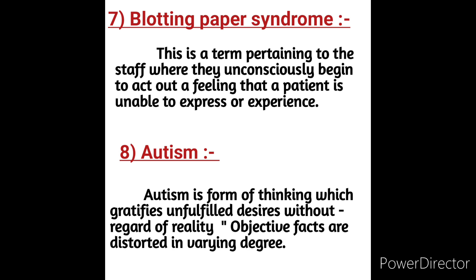Autism is a form of thinking that gratifies and fulfills desires without regard for reality; objective facts are distorted to varying degrees. Autism is a serious developmental disorder that impairs the ability to communicate and interact with others. Autism spectrum disorder impacts the nervous system and affects overall cognitive, emotional, social, and physiological health.